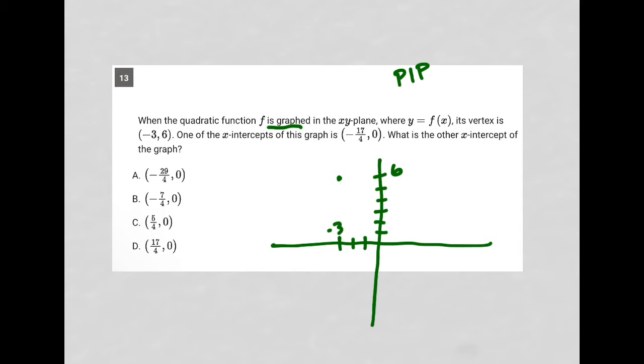One of the x-intercepts of this graph is at (-17/4, 0). So what is negative 17 fourths? In my calculator, 17 divided by 4 is 4.25. So I would be at, that's negative 4. So my x-intercept would be right beyond that at negative 4.25.